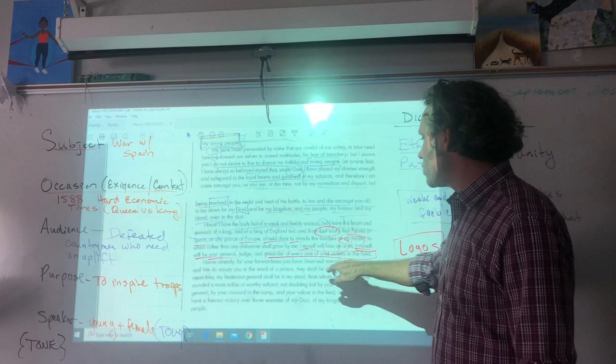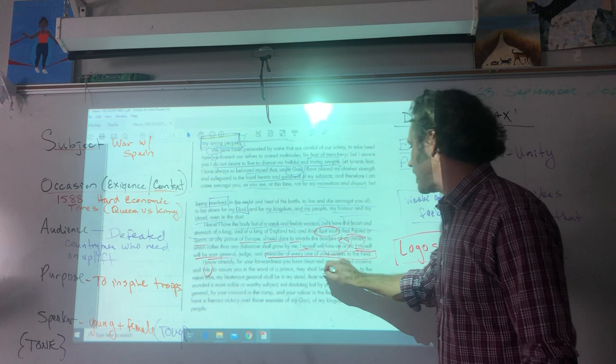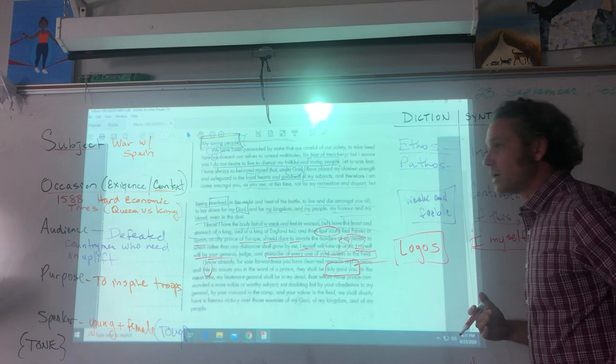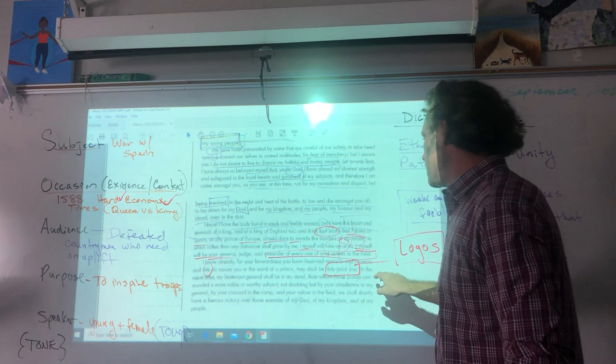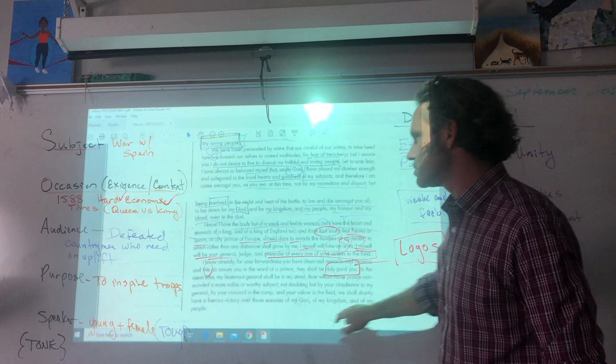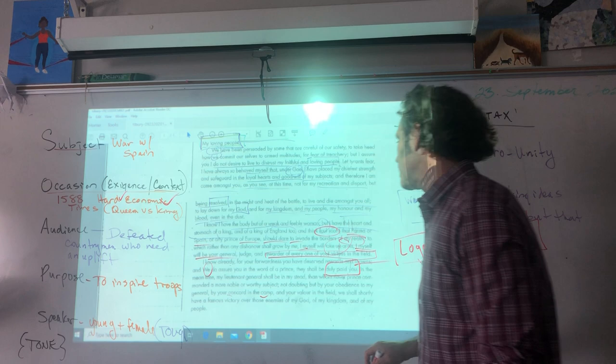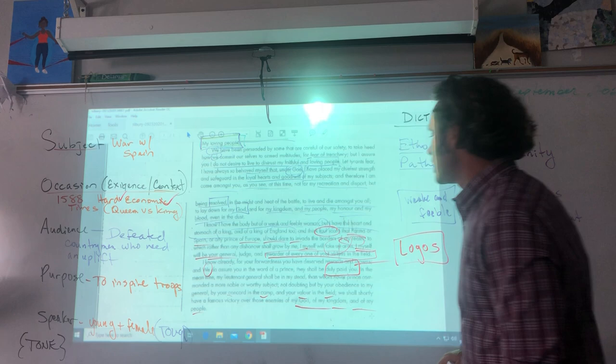'I know already for your forwardness you have deserved rewards and crowns, and we—' notice 'we' is capitalized—'do assure you in the word of a prince they shall be duly paid you.' There's that tie to that logical appeal—the men need money to do this, we need to be taken care of, the people are hungry. 'In the meantime my lieutenant general shall be in my stead, not doubting by your obedience to my general, by your concord in the camp and your valor in the field, we shall shortly have a famous victory over those enemies of my god, my kingdom, and of my people.' That construct, that parallel structure—